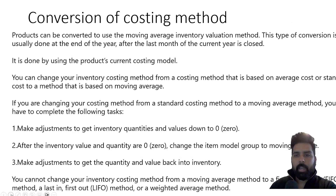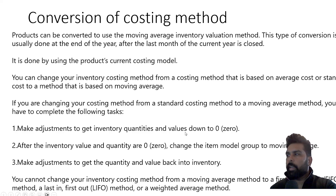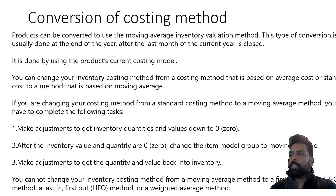In addition to this, there is the conversion costing method. In Microsoft Dynamics 365 there is an option to change your inventory costing method at end of year — from a method based on average cost or standard cost to moving average. However, to do that you must make an adjustment to get the quantity and value to zero, then change the item model group, and make the adjustment to get quantity and value back into inventory. Importantly, you cannot change the inventory costing method from moving average back to FIFO, LIFO, or weighted average.